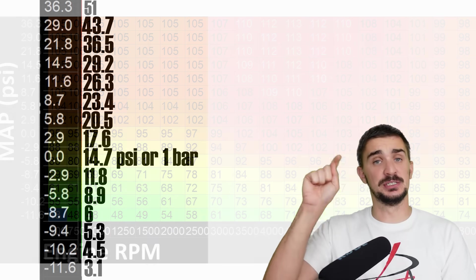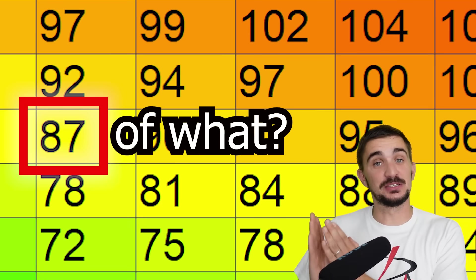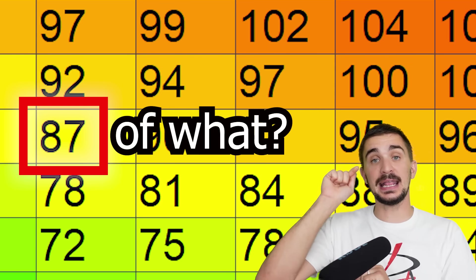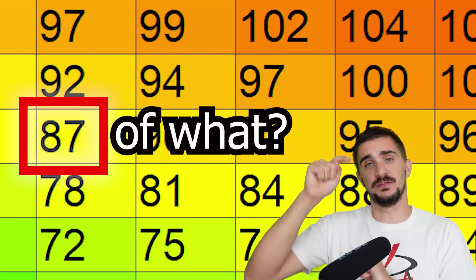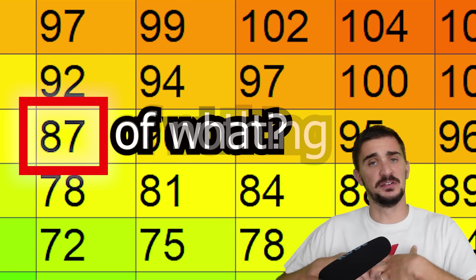Now let's address the numbers inside the table. 87 of what? Well, this is actually volumetric efficiency itself. It's volumetric efficiency of the engine at that particular intersection of engine RPM and engine load. So this is then 87 of nothing. It's not any particular unit. It's percentage.